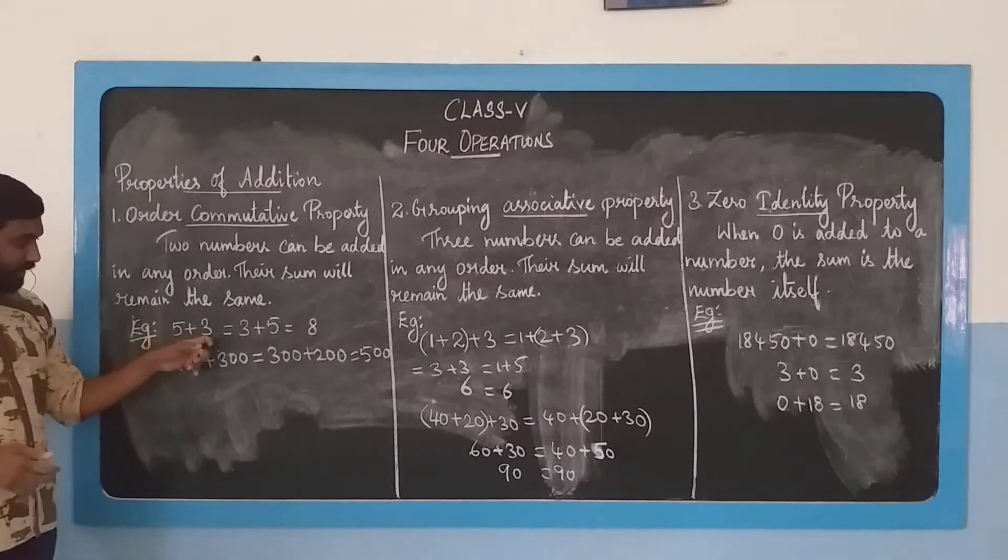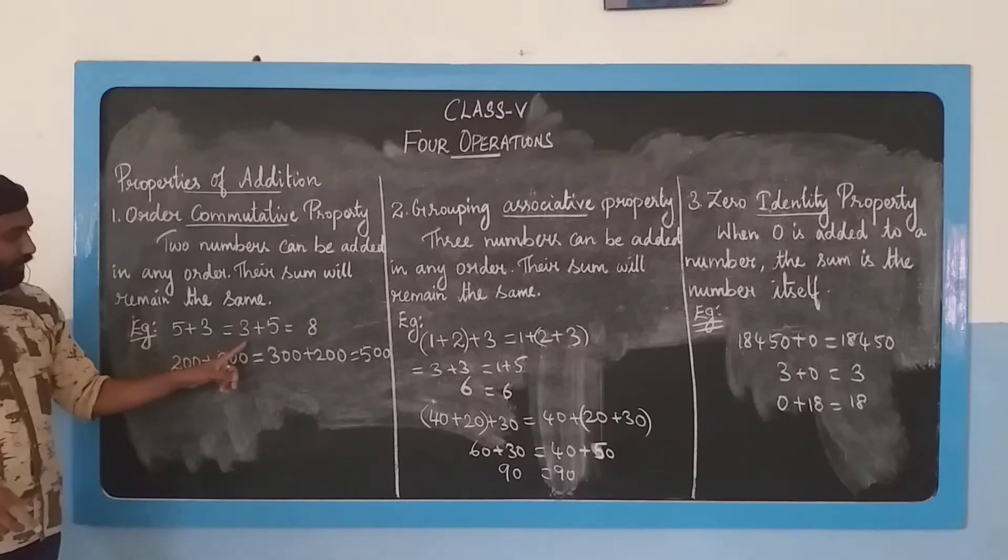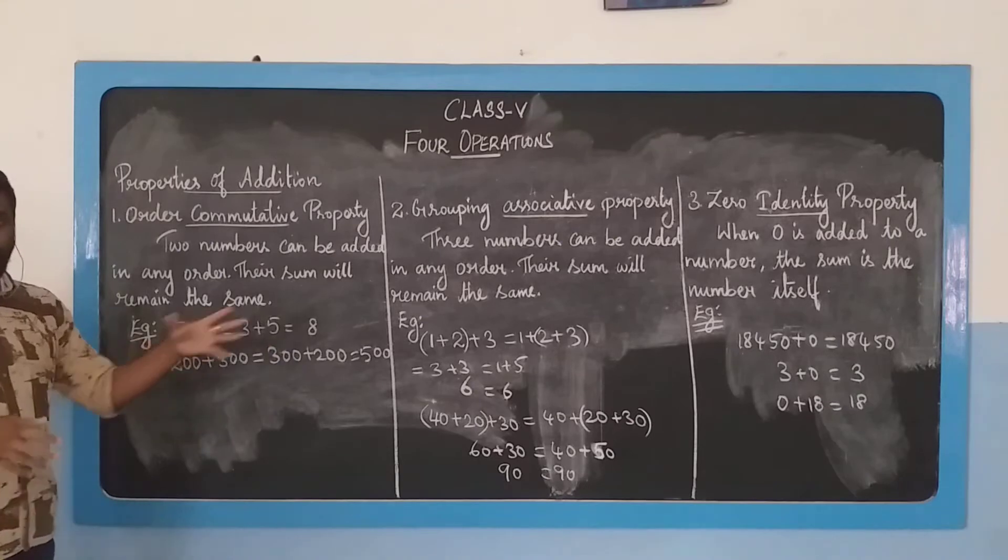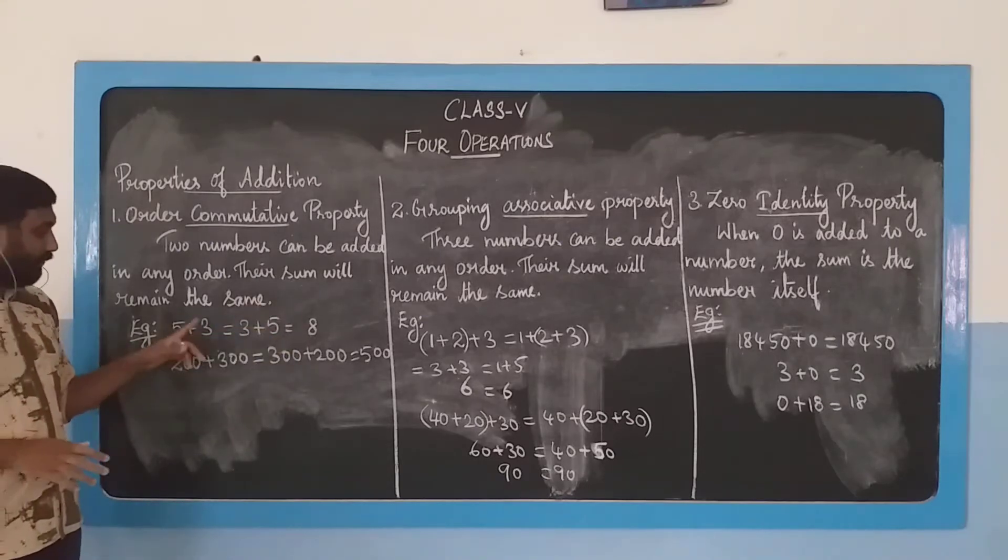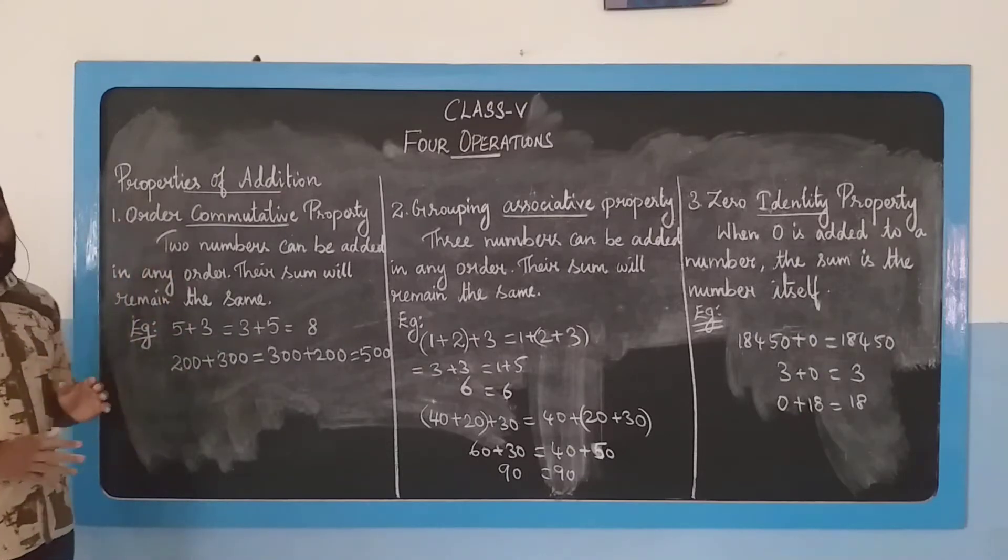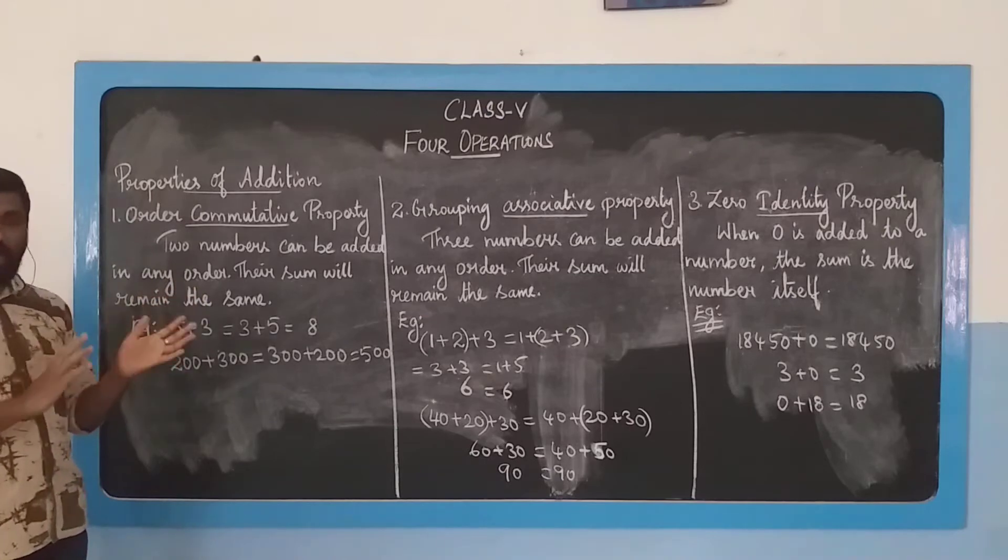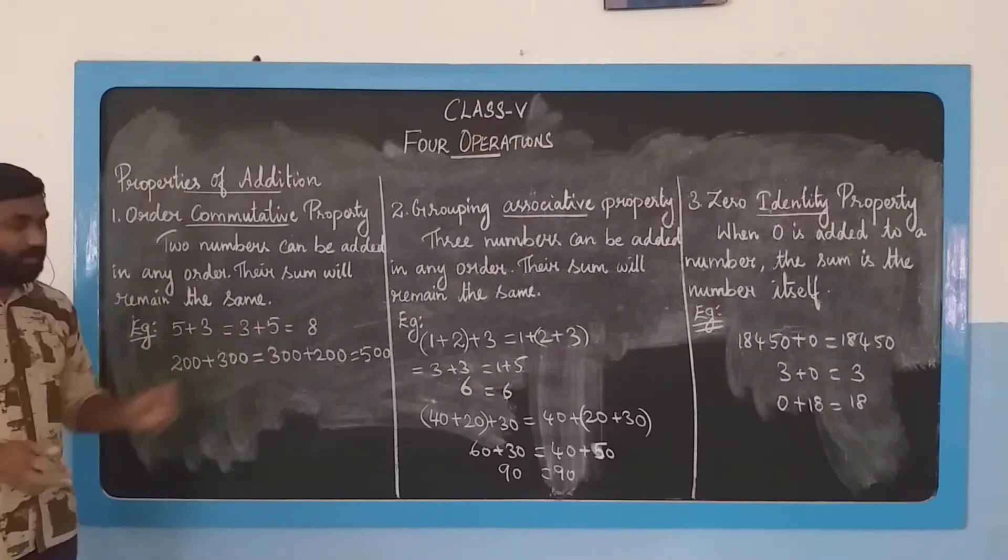See the example. If I add 5 plus 3, that equals 8. If I change the order and add 3 plus 5, the answer will also be 8. 5 plus 3 or 3 plus 5, the answer remains the same. That is what the commutative property means. However you exchange the order, the answer remains the same.